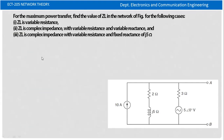This is the second problem. For maximum power transfer, find the value of ZL. The third example involves variable resistance and complex impedance.